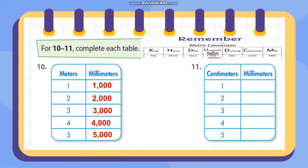For centimeter to millimeter, multiply by 10: 1 cm = 10 mm; 2 cm = 20 mm; 3 cm = 30 mm; 4 cm = 40 mm; 5 cm = 50 mm.